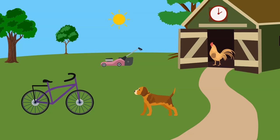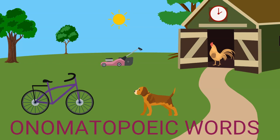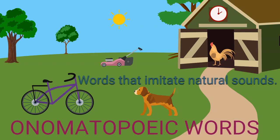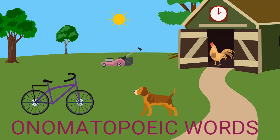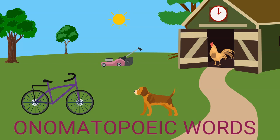Have you heard these sounds before? Yes — they are sounds from a bicycle bell, a dog, a rooster, and a clock. They are called onomatopoeic words, or words that imitate natural sounds, and they are an exceptional case for arbitrariness because the relationship between form and meaning seems very close. However, onomatopoeic words take different forms in different languages, which means there is no truly natural connection between form and meaning.